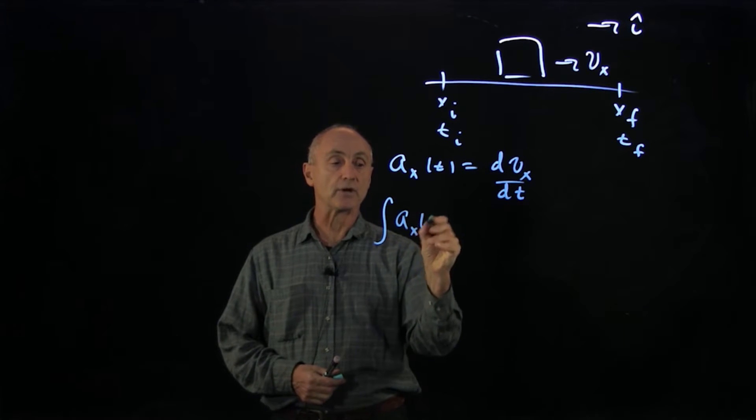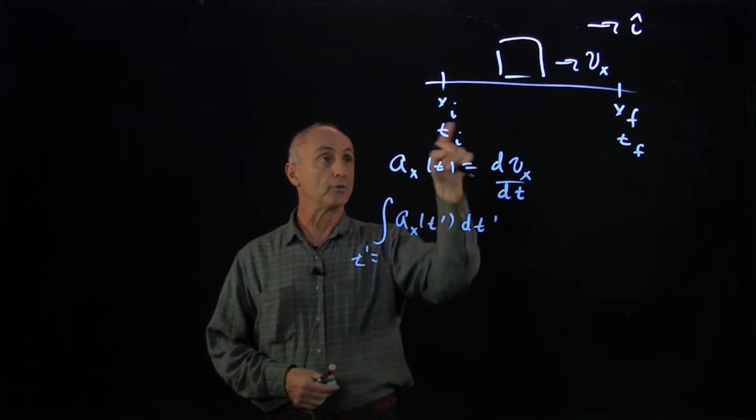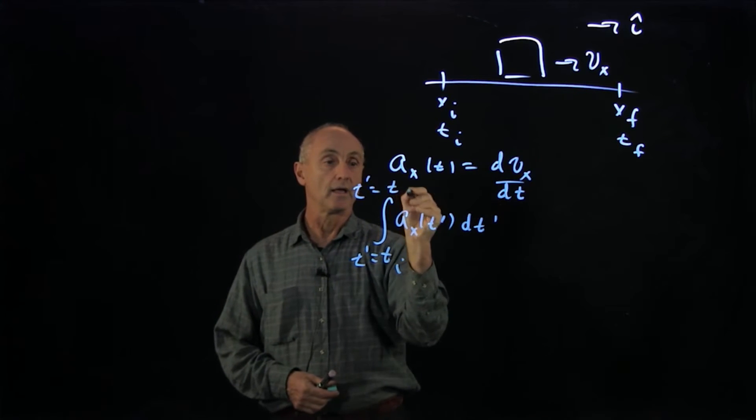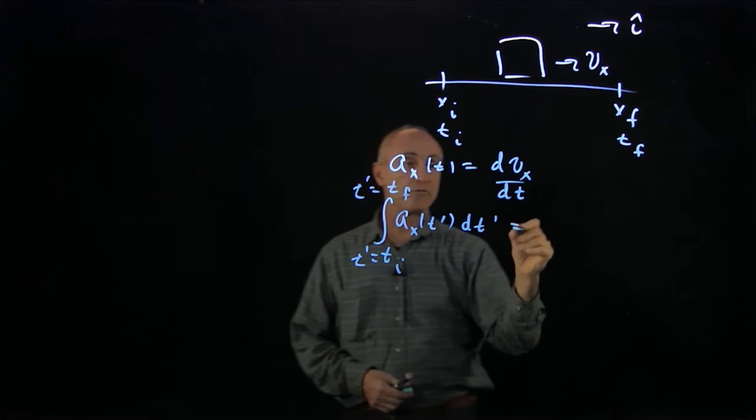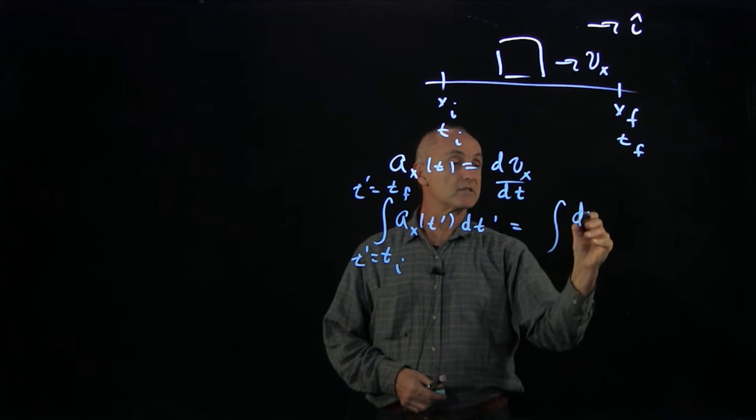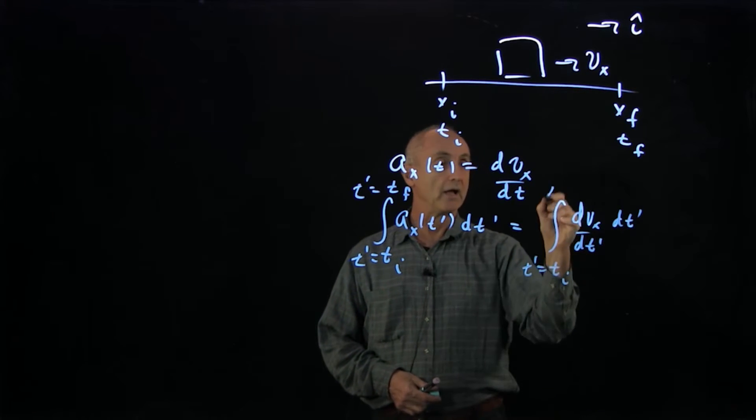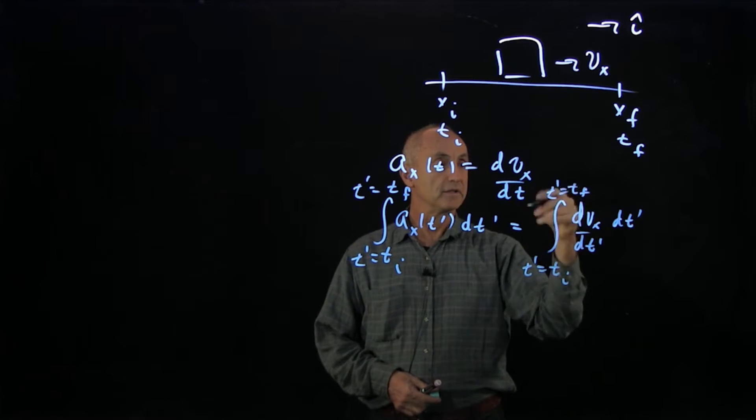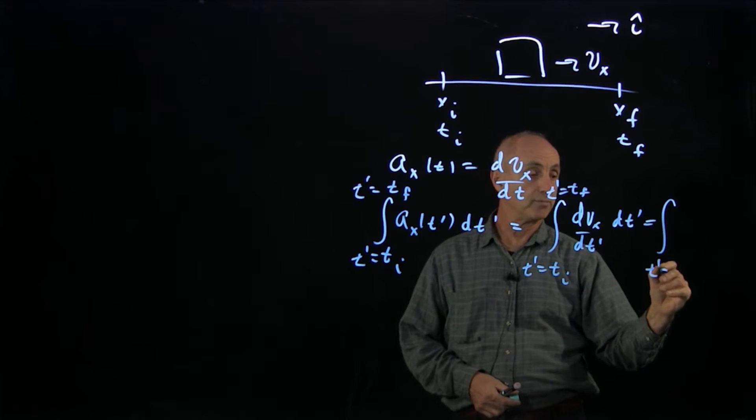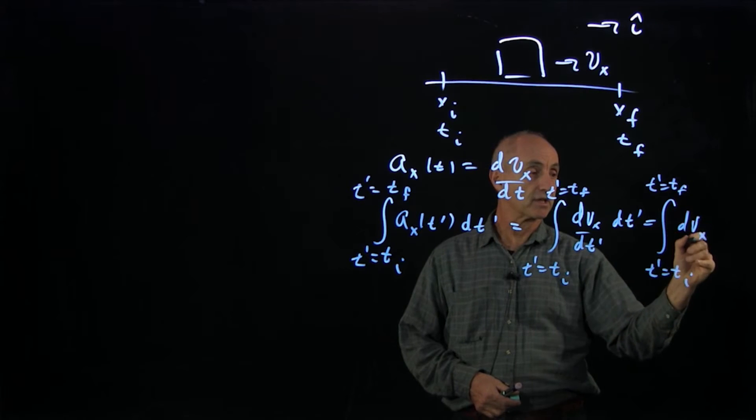So if we integrate acceleration, I'm going to introduce an integration variable, dt prime. And our integration variable goes from our initial time to some final time. And if we use our fact that acceleration is the derivative of velocity, then we can write this as dvx/dt prime, dt prime again. After a while, I'll drop the dummy variables and the endpoints of the integral. And this simply becomes the integral from t prime equals t_initial to t prime equals t_final of dvx prime.